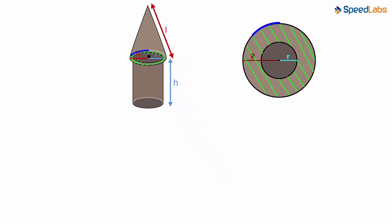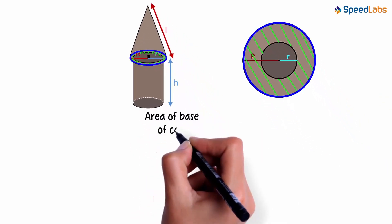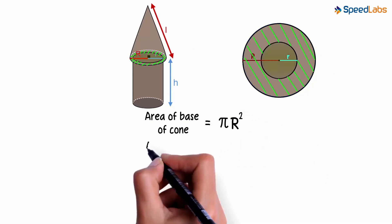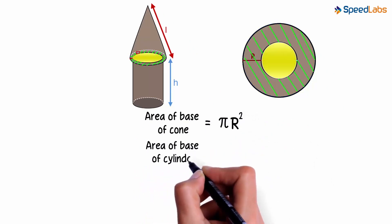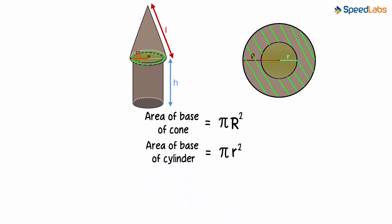It is easy! We know that area of base of cone is PI capital R squared, and the area of base of cylinder is PI lowercase r squared. And the area of this shaded region will be the difference in these two areas.